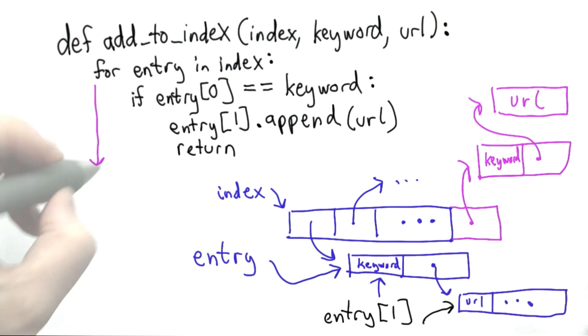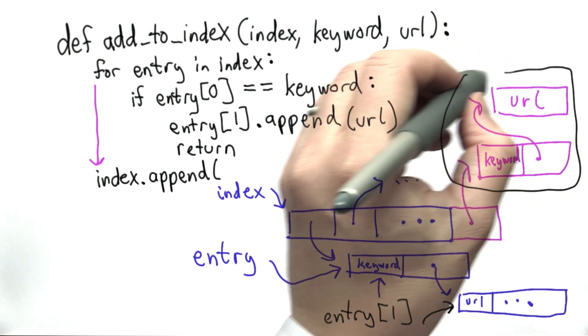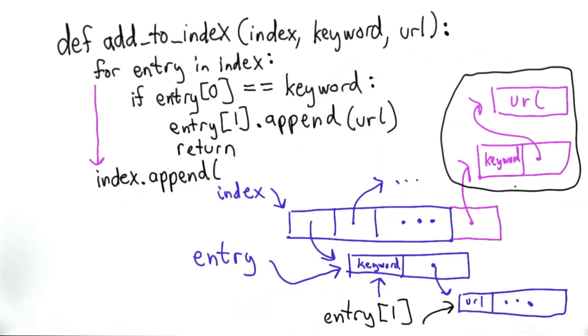Well, to add a new element to index, we use append, and we need something to pass into append that's the structure that we want to add. This whole thing is what we want to add.